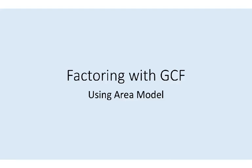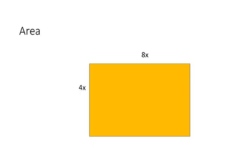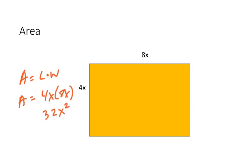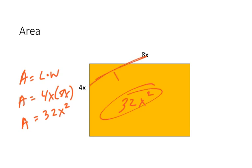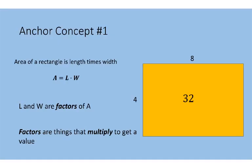In this video, we're going to look at factoring out the greatest common factors using the area model. We're going to start with some really basic ones. If we're finding the area of a rectangle, it's going to be length times width. So if we did this, we would say the area is 4x times 8x, and that's 32x squared would be the area. The relationship between the two sides is that they multiply together to get the area.